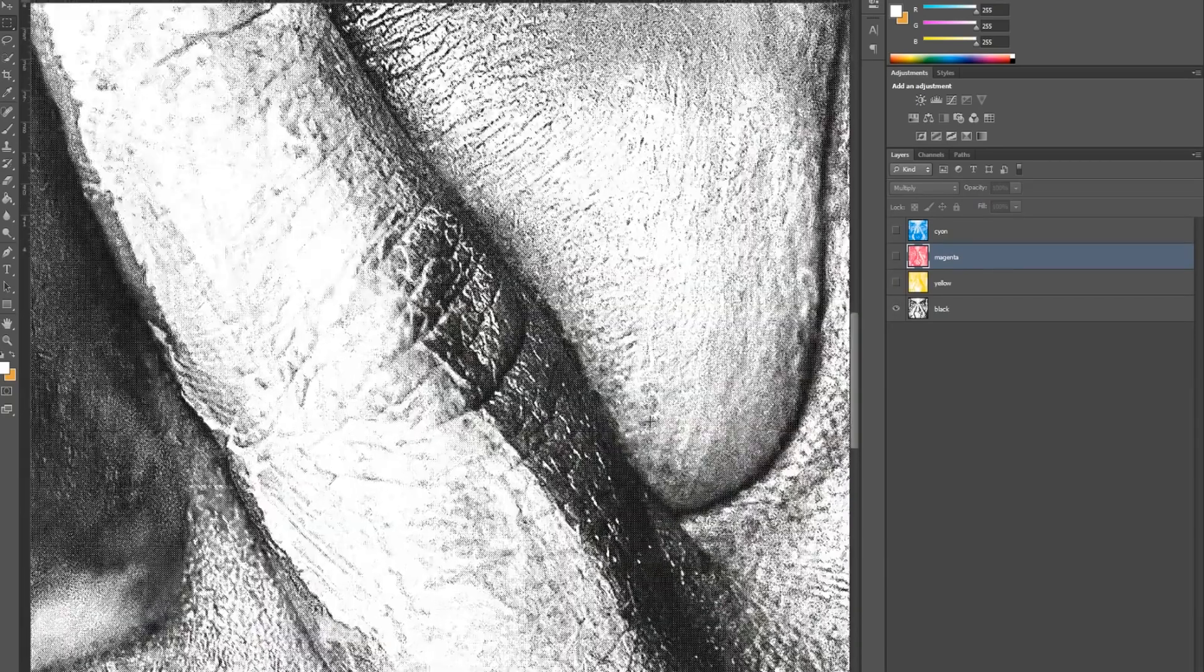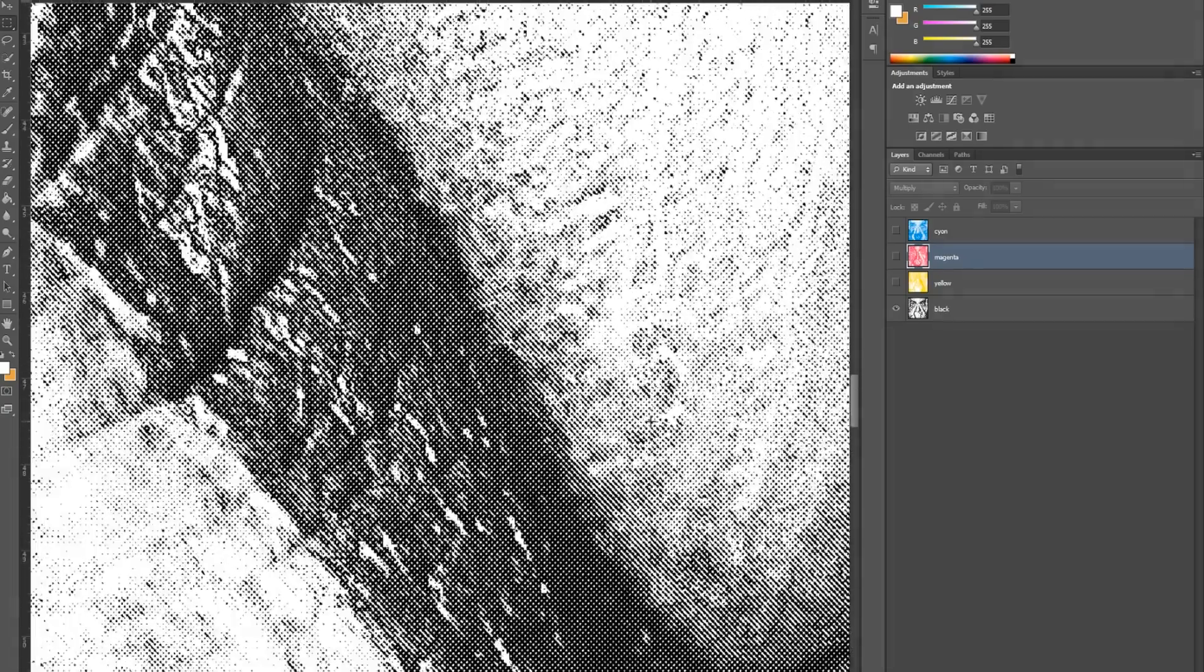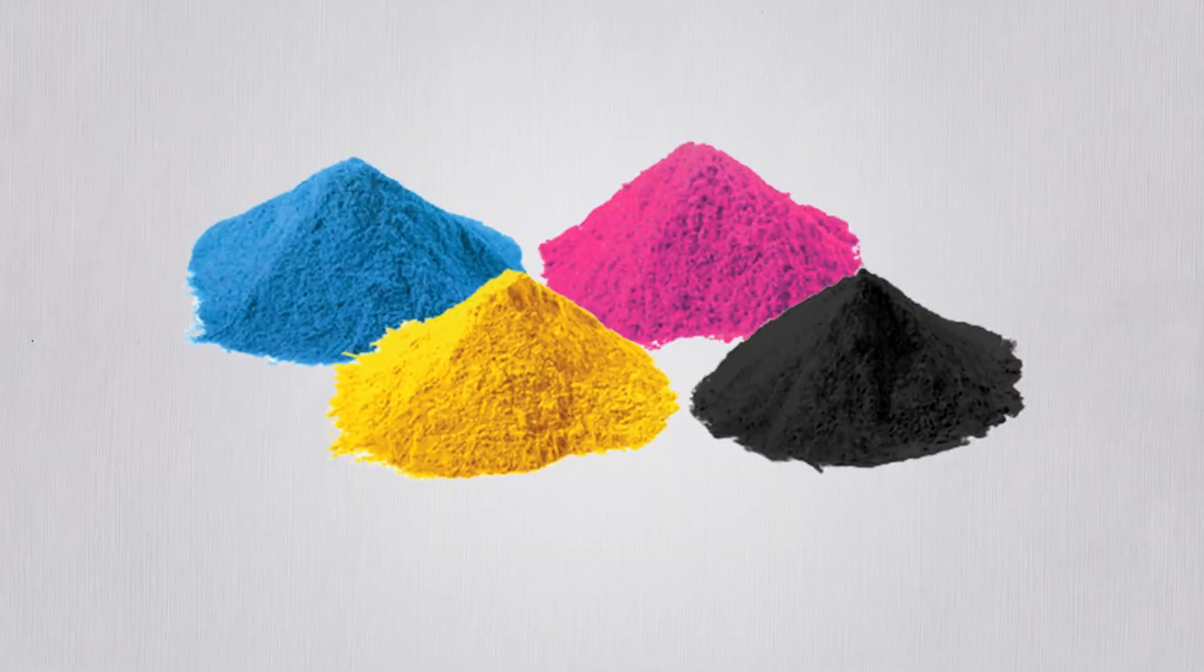Zoom in on the photo. We can see that the photo is composed of tiny dots like these. The process of printing from a printer is that small particles called toner are attached to the paper, and those dots together portray a photo.